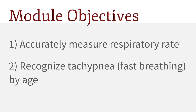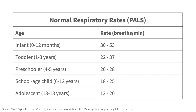We have learned how to accurately count the respiratory rate. Now, let's understand how tachypnea varies by age. The definition of tachypnea, or fast breathing, is related to age as shown in this chart. We have displayed the respiratory rate reference ranges from the Pediatric Advanced Life Support, or PALS course.